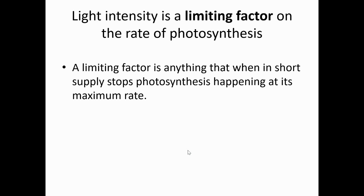You could describe light intensity as a limiting factor on the rate of photosynthesis. A limiting factor is anything that, when in short supply, stops photosynthesis happening at its maximum rate. If there's not enough of it, the chemical reaction will not be able to happen fast enough. You need to know this definition — it will be tested in the after-lesson quiz and in the describe section of today's objective questions.